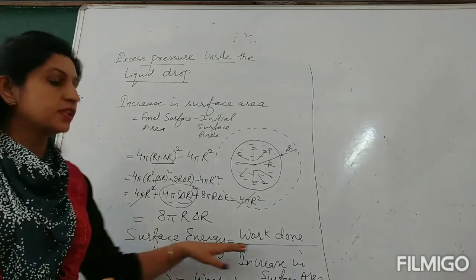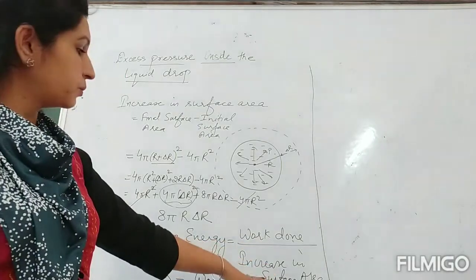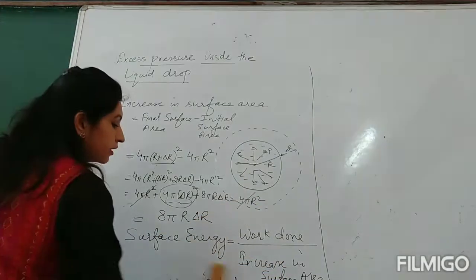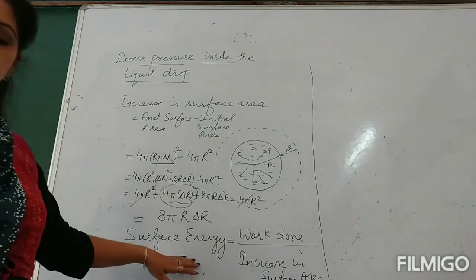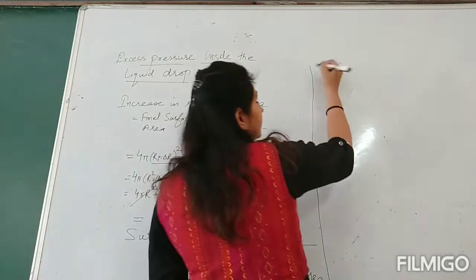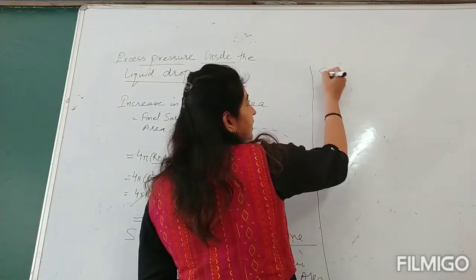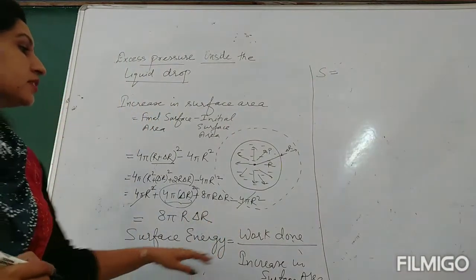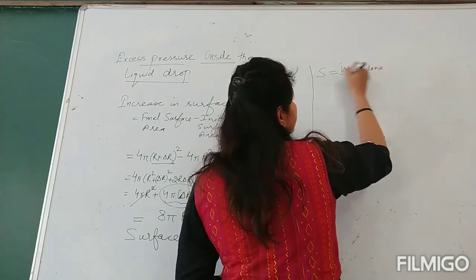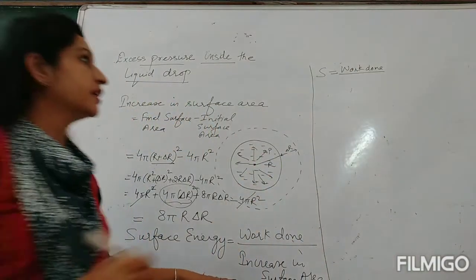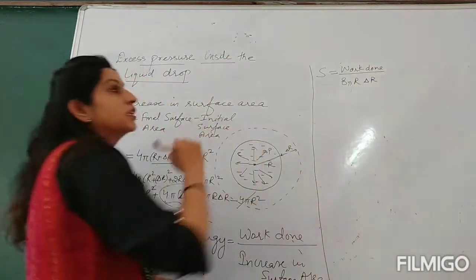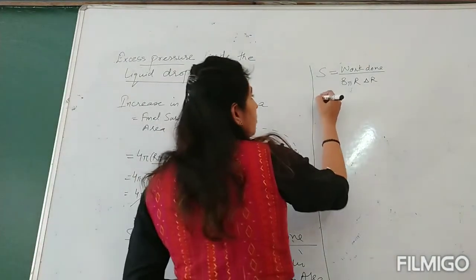Surface energy is work done over increase in surface area. Since surface energy numerically equals surface tension S, we have S = work done / (8πR·δr), so work done equals S × 8πR·δr. Now what is work done? Work done is force into distance in the direction of force.